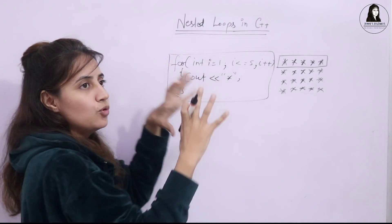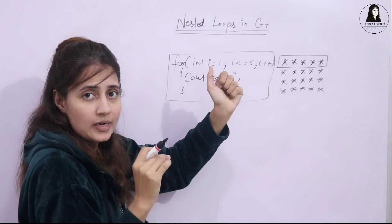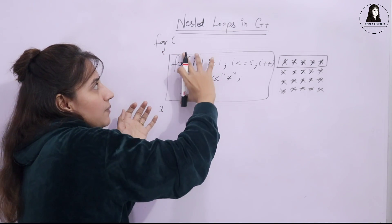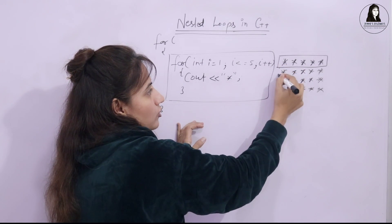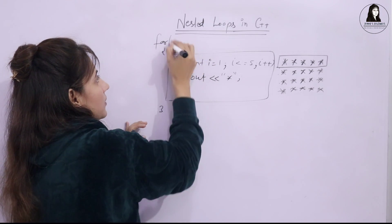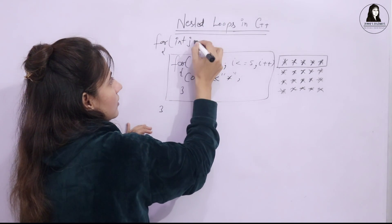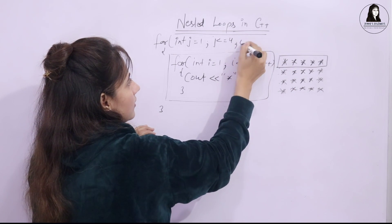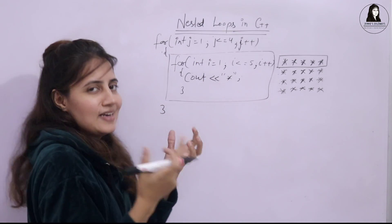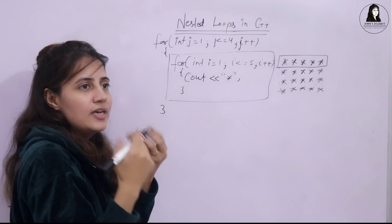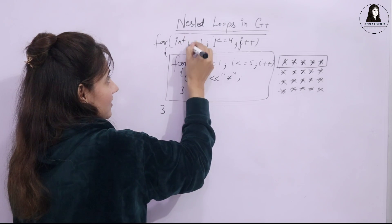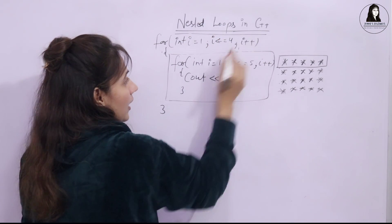Whatever you want to repeat, we put it in a loop — whether for, while, or do-while. So this inner for-loop process is placed inside an outer for loop. How many times should it repeat? There are 4 rows, so the outer loop runs 4 times. We use variable j for the outer loop: j = 1, j <= 4, j++. For the inner loop, we conventionally use i for the outer and j for the inner loop, though j follows i alphabetically — it's not a strict rule, you can use any variable name.